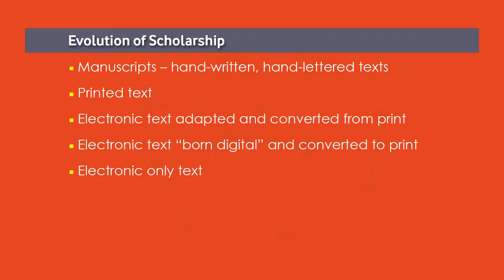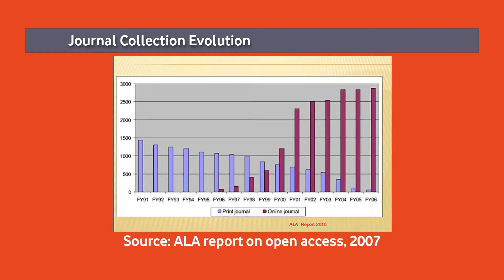If you see the evolution of scholarship, we started with the manuscript, then came the Gutenberg revolution bringing printed text, and in the early 1990s started the digital text. Looking at a graph covering 1991 to 2006, the blue bars indicate the number of new print journals in a year — around 1,500 in 1991. The maroon bar indicates online journals or e-journals. The first online journal appeared in 1996, and within just 4 years it outnumbered print journals.